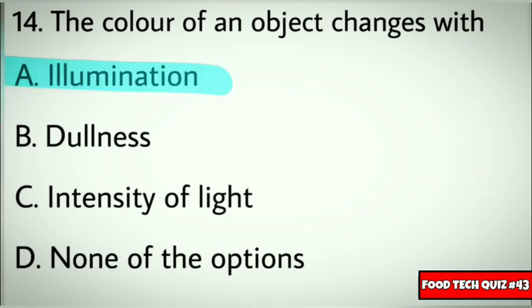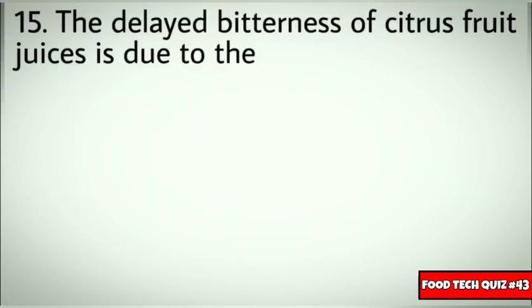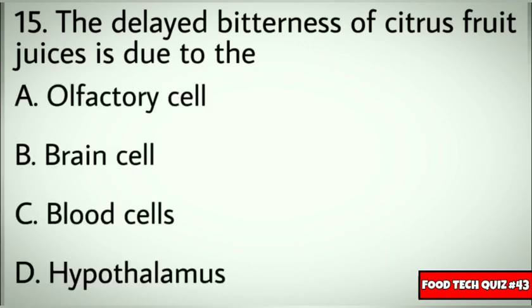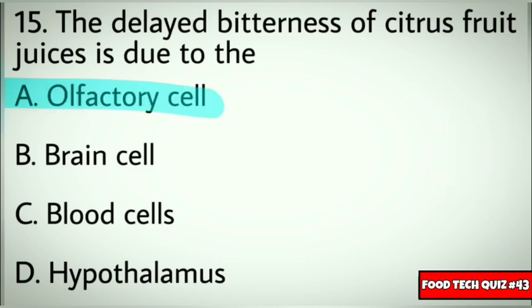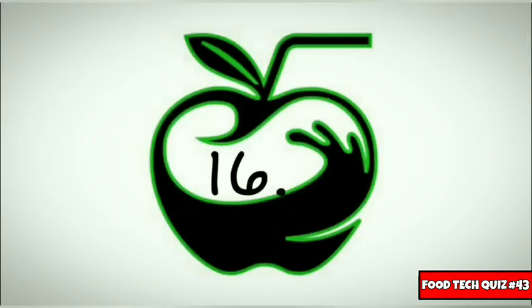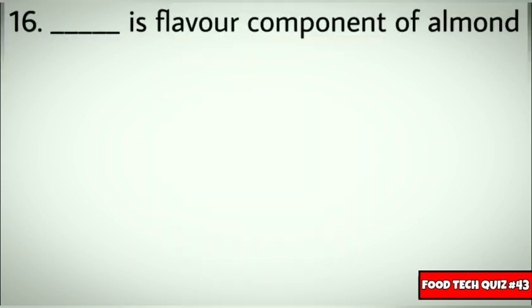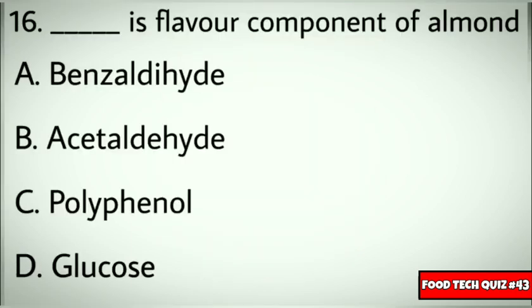Question number 15: The delayed bitterness of citrus fruit juice is perceived by? Options: A) Olfactory cells, B) Brain cells, C) Blood cells, D) Hypothalamus. Correct answer: A) Olfactory cells. Question number 16: Dash is the flavor component of almond. Options: A) Benzaldehyde, B) Acetaldehyde, C) Polyphenol, D) Glucose. Correct answer: A) Benzaldehyde.